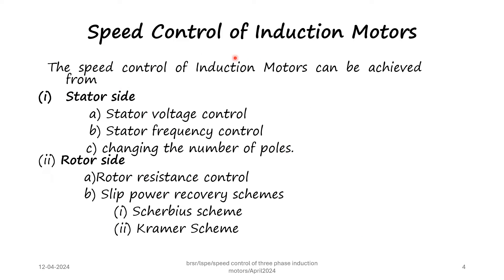Speed control of induction motors can be achieved from the stator side and rotor side. From the stator side there are three possible methods: stator voltage control, stator frequency control, and changing the number of poles. From the rotor side the methods are rotor resistance control and slip power recovery schemes. Under slip power recovery schemes there are two schemes: Scherbius scheme and Kramer scheme.